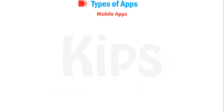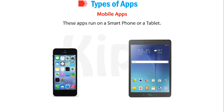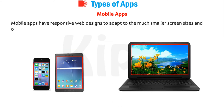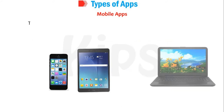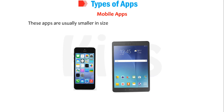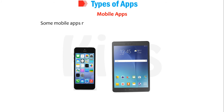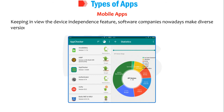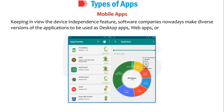Mobile apps run on a smartphone or a tablet. Mobile apps have responsive web designs to adapt to the much smaller screen sizes and orientation of mobile devices. These apps are usually smaller in size as mobile devices have limited memory. Some mobile apps may come preloaded on cell phones or tablets. Keeping in view the device independence features, software companies nowadays make diverse versions of applications to be used as desktop apps, web apps, or mobile apps.